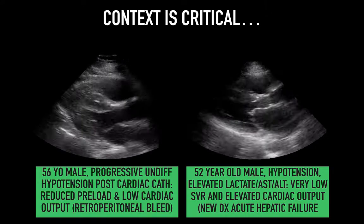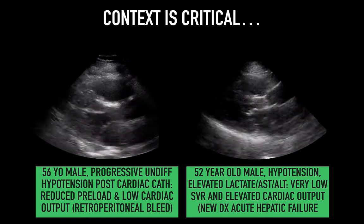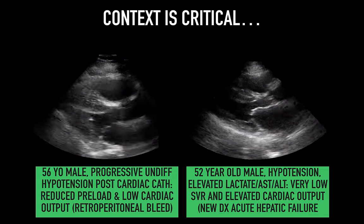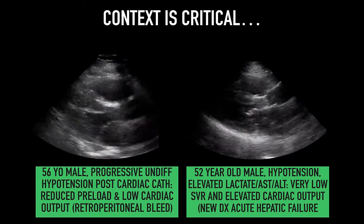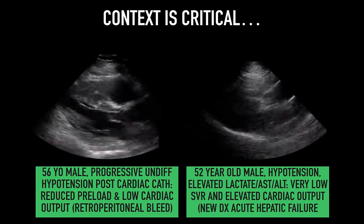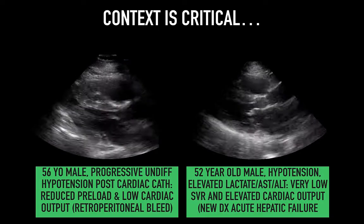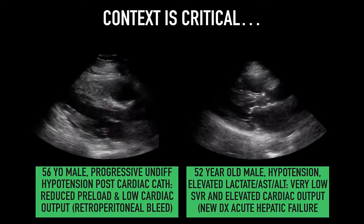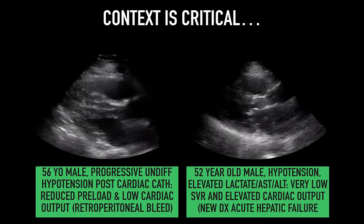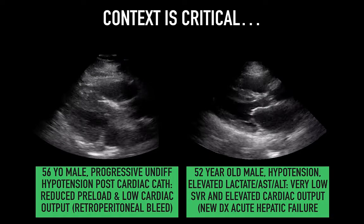Remember that context is critical. On the left, we can see a patient who is 56, post-cardiac cath, with reduced preload and low cardiac output — this patient had a retroperitoneal bleed and requires blood and fluids to regain their end-systolic volume. On the right, this is a 52-year-old male with elevated lactate and effectively liver failure. They have a very low systemic vascular resistance and high cardiac output — so-called high-output heart failure.